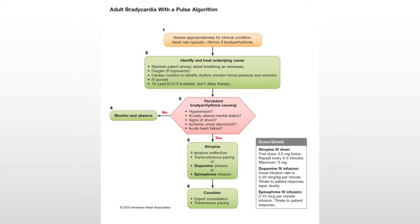Adult bradycardia with a pulse — not new. We've seen this one. We want to assess for appropriateness of the clinical condition. There are very fit people with resting heart rates in the 40s with no distress, but a frail 90-year-old with a heart rate less than 50 may feel it. Typically it's considered a bradyarrhythmia if the heart rate is less than 40 and the patient is symptomatic. We want to identify and treat the underlying cause, maintain a patent airway, give oxygen if needed, put them on a cardiac monitor, get an IV and a 12-lead EKG.